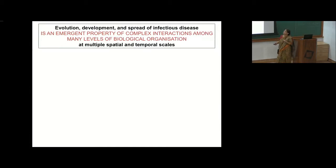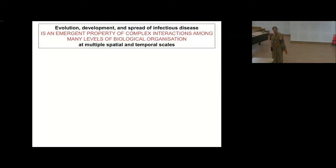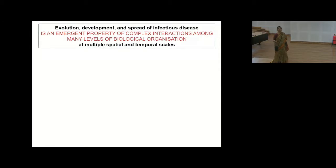You can't treat epidemiology or modelling infectious diseases like an isolated phenomenon. The evolution, development, and spread of any infectious disease is a property of complex interactions among many levels of biological organization. The number of cases you see at a particular place actually emerges out of all these different organizational levels and contexts, happening at both spatial and temporal scales.